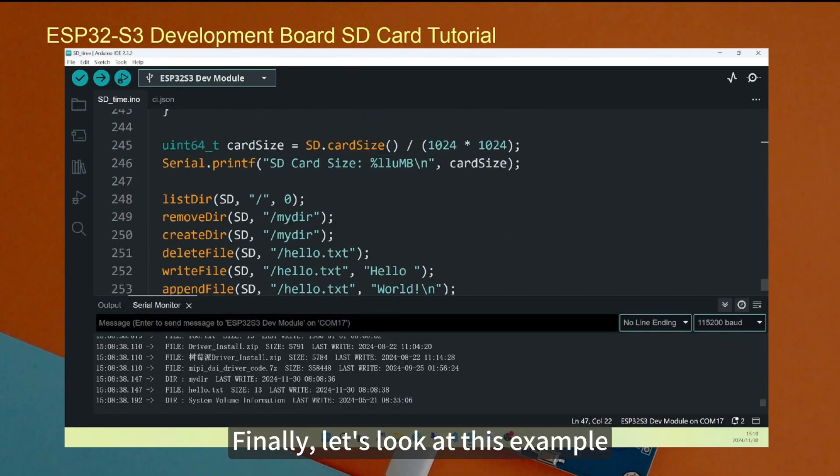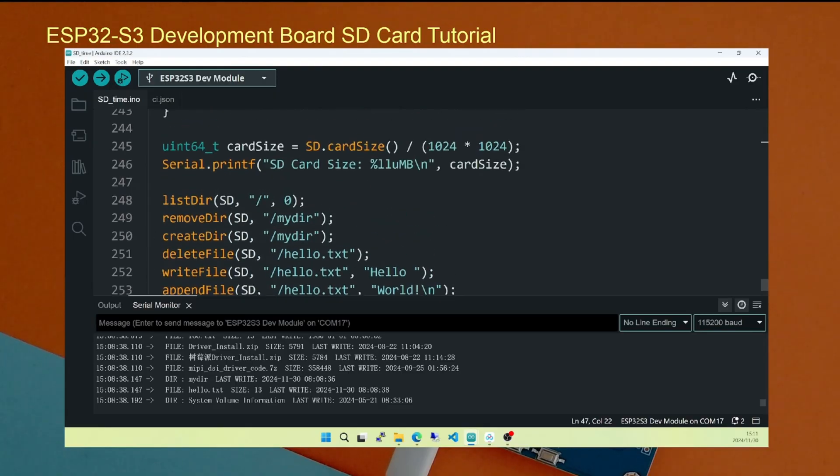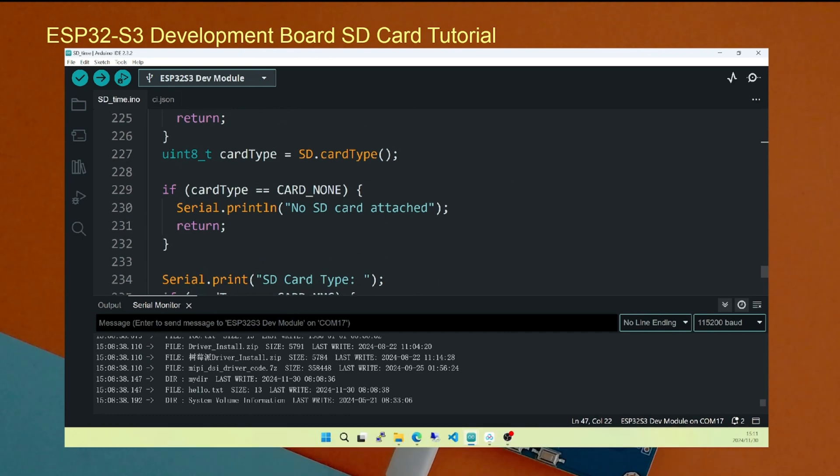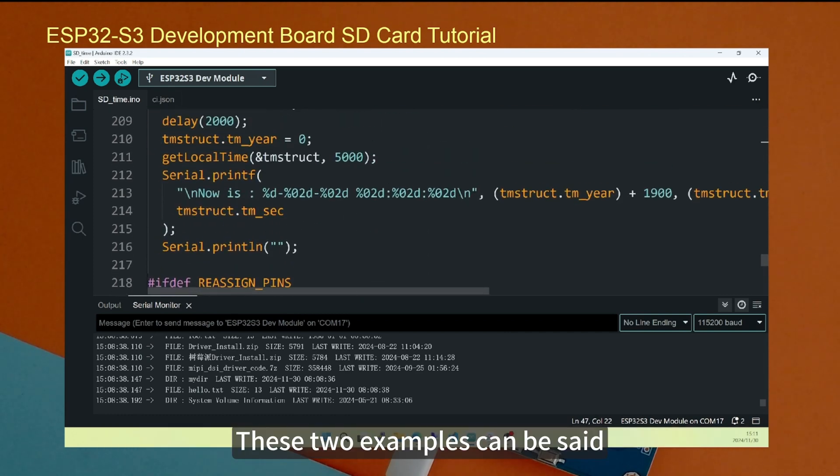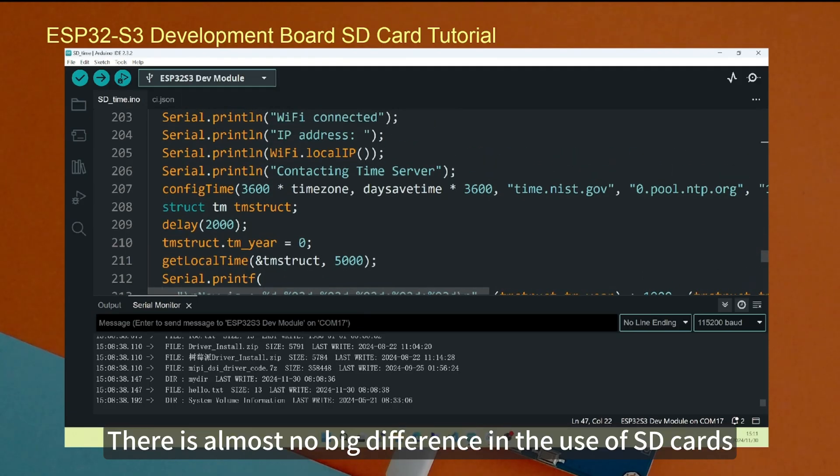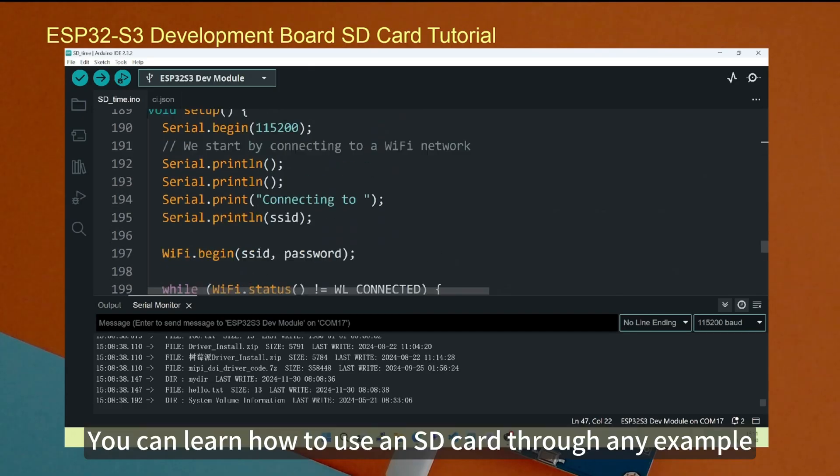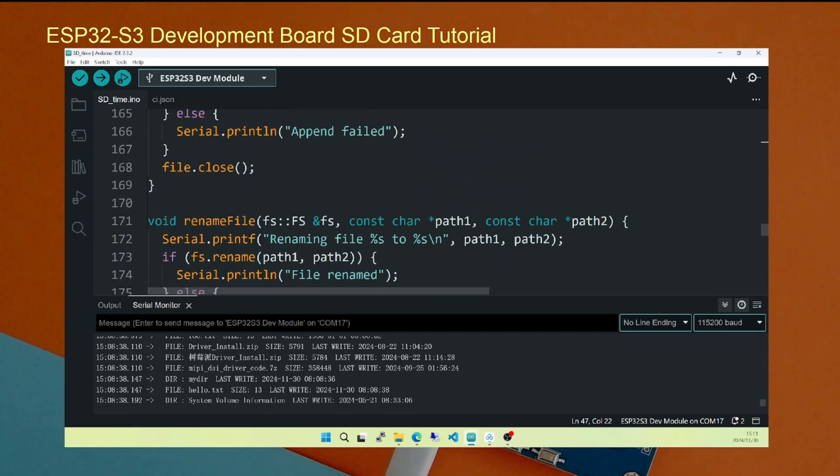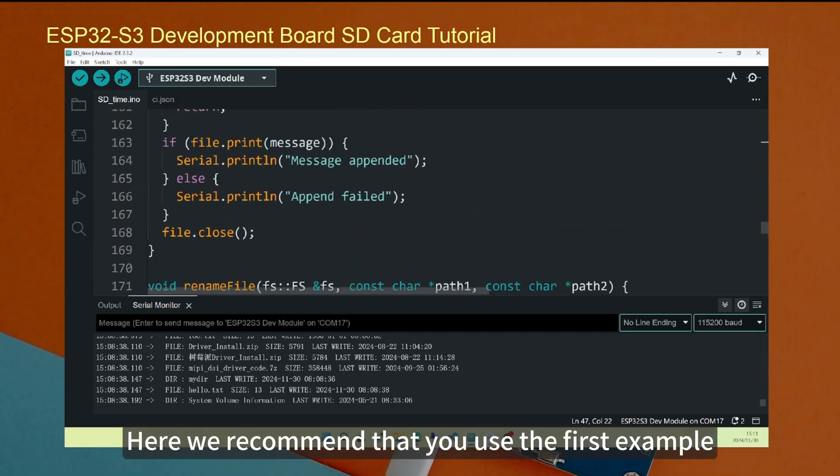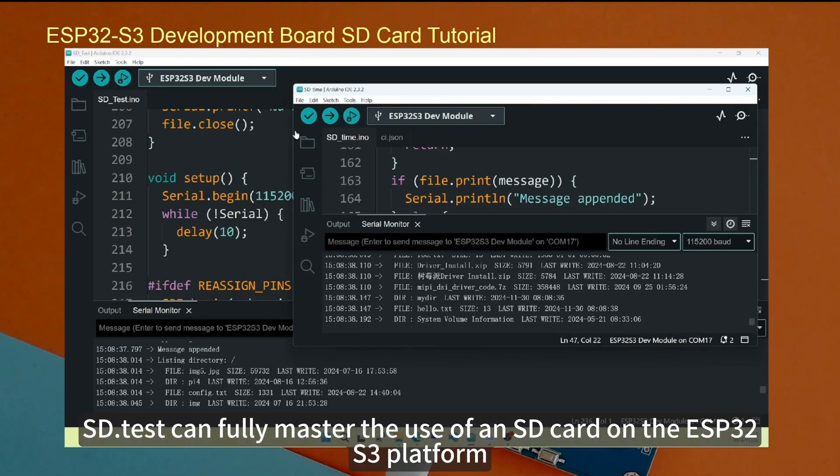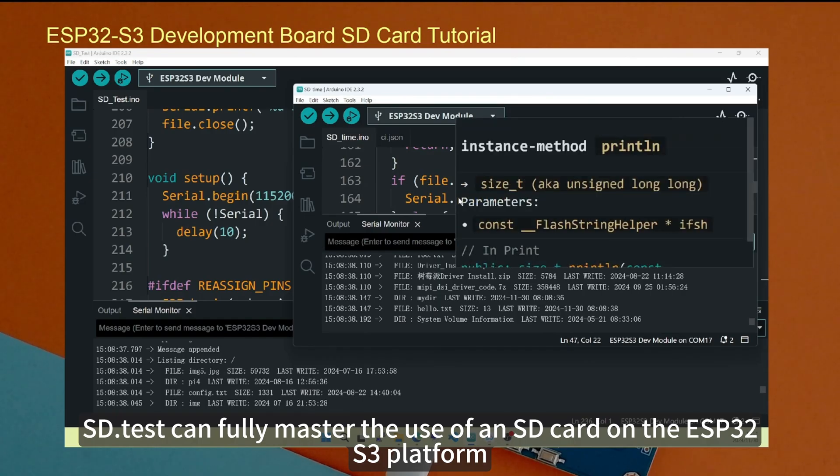Finally, let's look at this example. After its Wi-Fi is turned on, it has little effect on the SD card. These two examples can be said, there is almost no big difference in the use of SD cards. You can learn how to use an SD card through any example. Here we recommend that you use the first example. SD.test can fully master the use of an SD card on the ESP32-S3 platform.